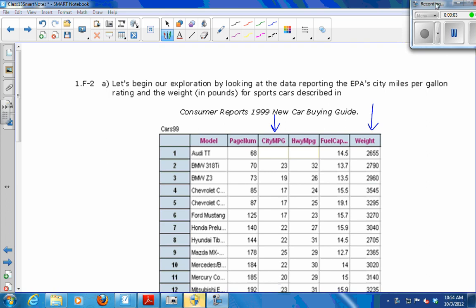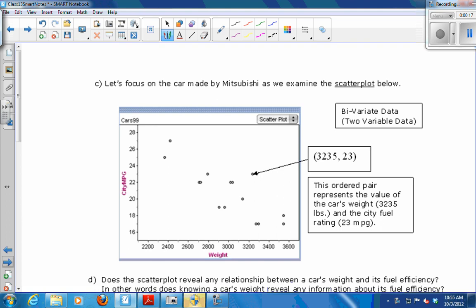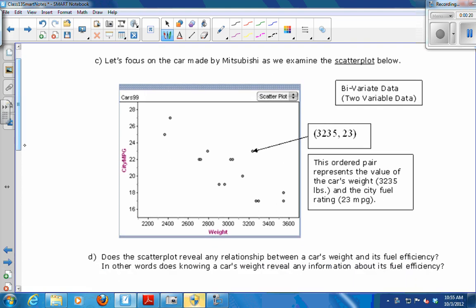Okay, so we're looking at the relationship between city miles per gallon and the weight of a car. And we think that there's going to be a relationship. So we started by looking at some data. If we wanted to plot this data, we could put weight on the x-axis and city miles per gallon on the y-axis. Then every car would be plotted with one point. It has a weight and a miles per gallon. So this point right here is 3235, 23. That represents the value of the car's weight, so 3,235 pounds and 23 miles per gallon in the city.